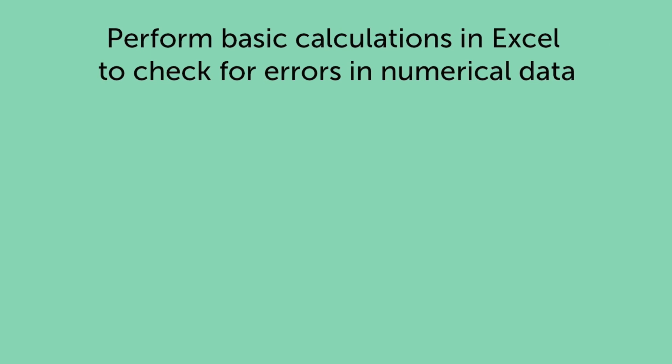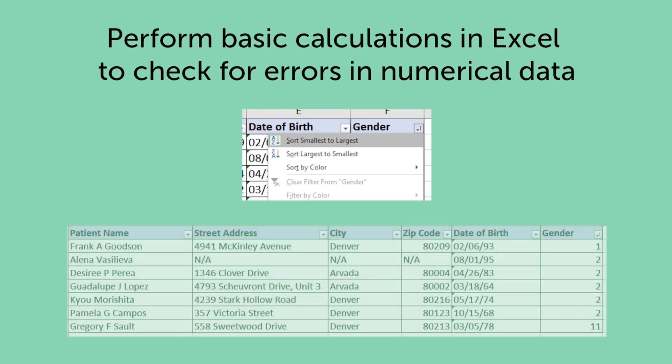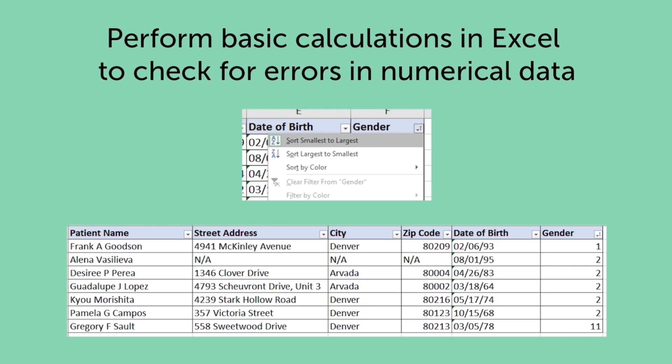Perform basic calculations in Excel to check for errors in numerical data. For example, sorting the data may highlight outliers, or errors, in data entry. Outliers are data that have unusual values compared to the rest of your data. An example might be if you are recoding data into 1s and 2s — sorting the data would help you identify where you might have accidentally typed an 11 instead of a 1.